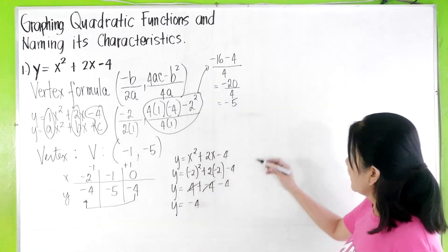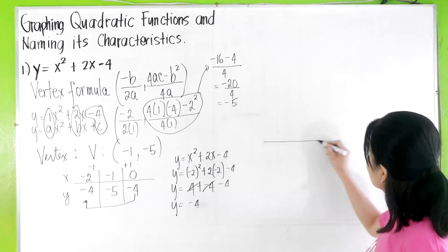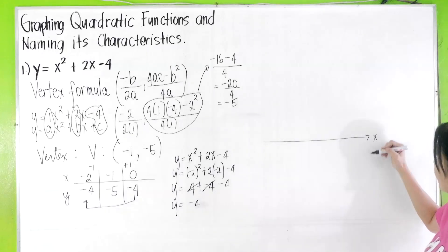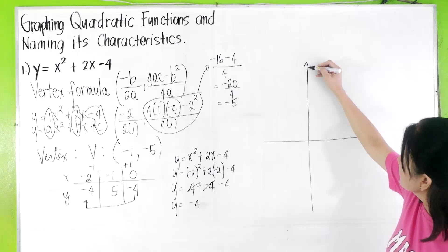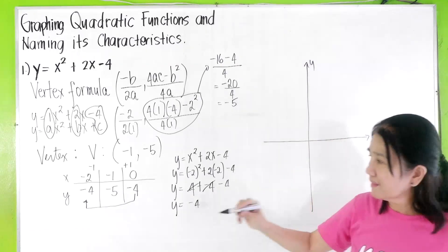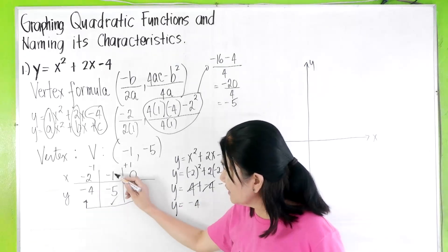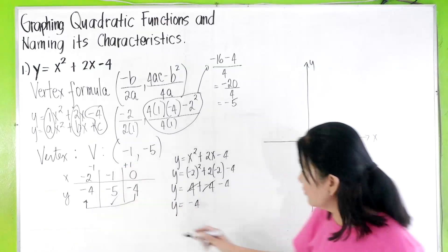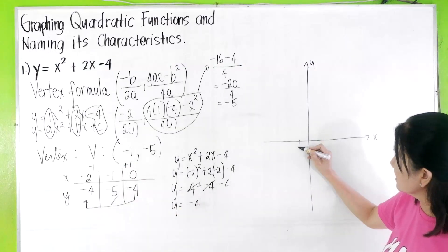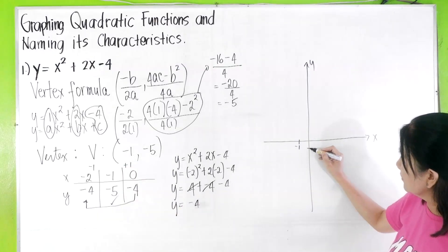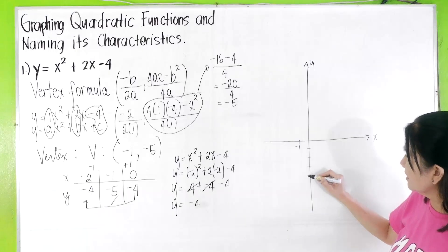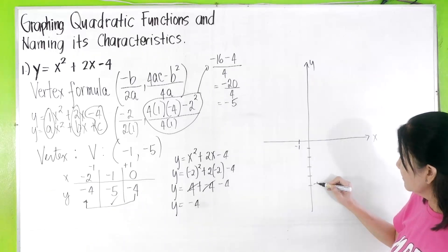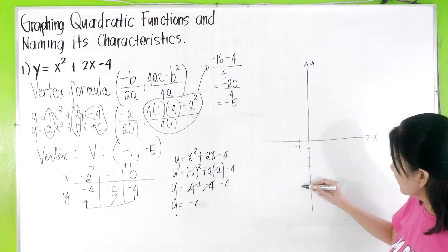Now, let's graph the parabola once you have that. You can draw the x-axis and the y-axis. The first thing that you plot will be the vertex, -1, -5. This is, let's say, -1, -1, -2, -3, -4, -5. -1, -5 will be here.